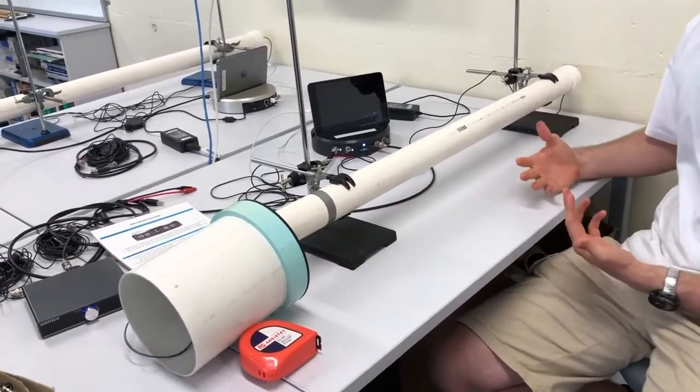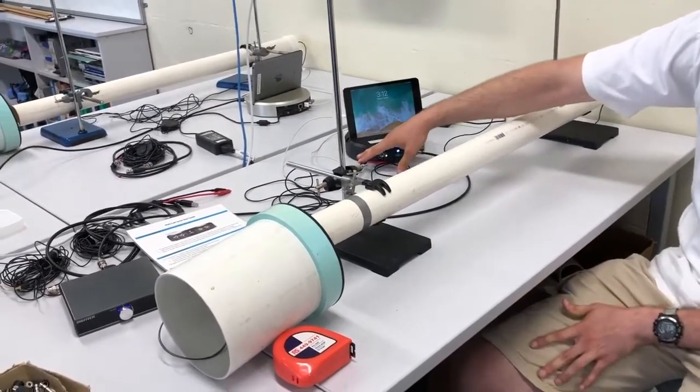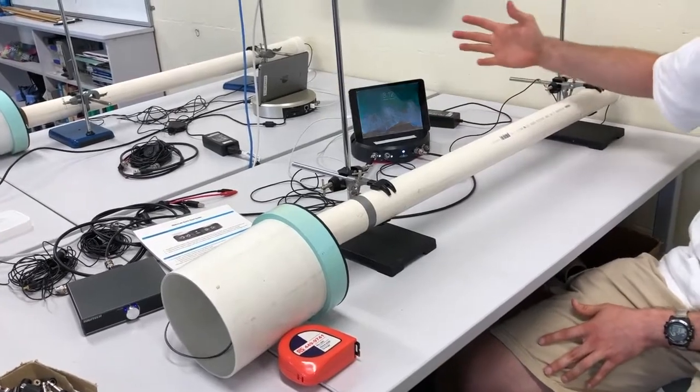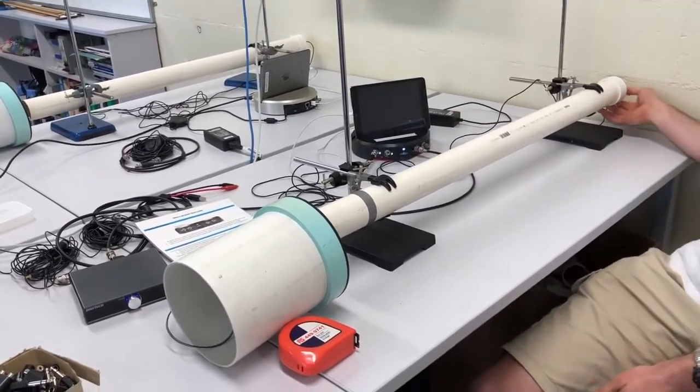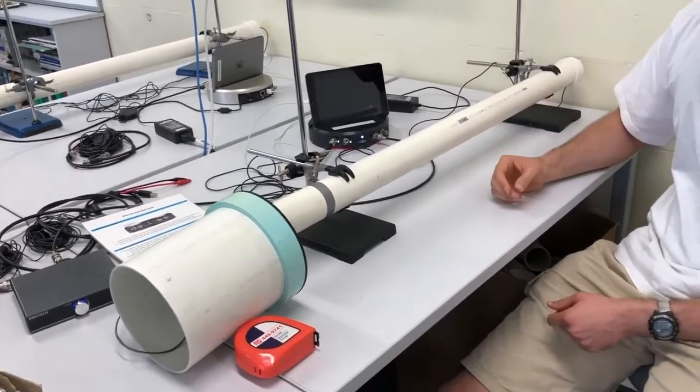We actually run this experiment now with the Moku. Over here we have our Moku that we're using both as a function generator to create a sweeping sine wave and then we also have it used as an oscilloscope, so we've got a microphone built in the back so that way the students can see what's happening with the frequency and with the amplitude as they perform the experiment.